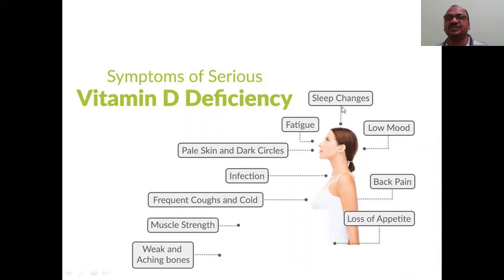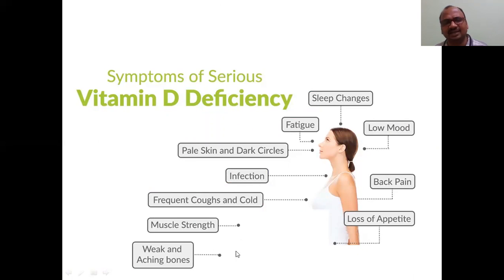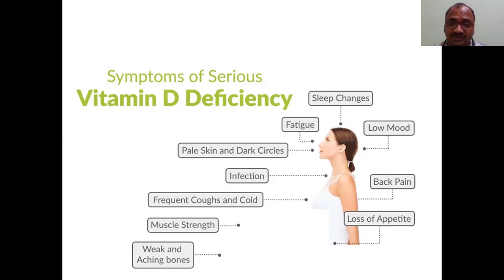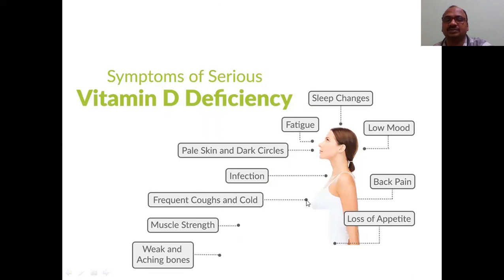Symptoms of vitamin D deficiency: sleep changes, low mood, back pain — because vitamin D deficiency leads to calcium deficiency — loss of appetite, fatigue, pale skin, dark circles on the skin, and infection in the throat or lungs. That's why vitamin D is very important to fight corona also — it boosts your immune system. Frequent cough and colds are also symptoms of deficiency. Muscle strength will be decreased, and weak and aching bones with bone pains will come.